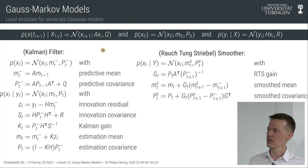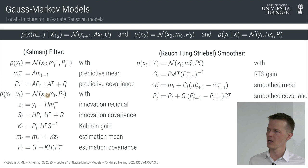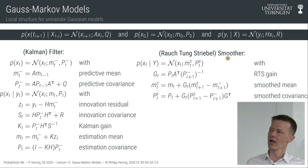These consist of: the Kalman prediction step, a simple computation to get the predictive distribution; the Kalman update step, computing the gain K and estimation distribution for x_t; and then the smoothing step — named for Rauch, Tung, and Striebel, not Kalman — which gives the smoothed distribution. Together, this is Kalman filtering and RTS smoothing.